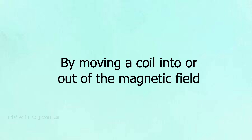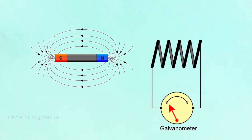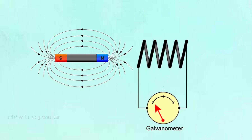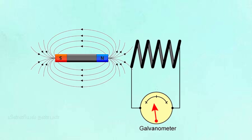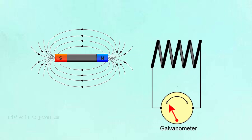The second method is by moving the coil into or out of a magnetic field. In this case, the magnetic field itself is stable and constant, but the coil moves through it. As the coil moves in or out of the steady magnetic field, the flux through the coil changes, and an EMF is induced.